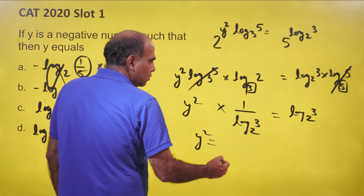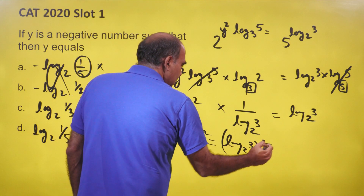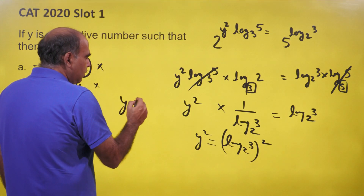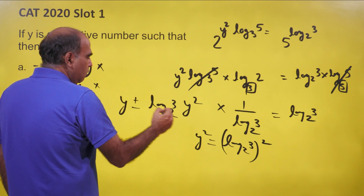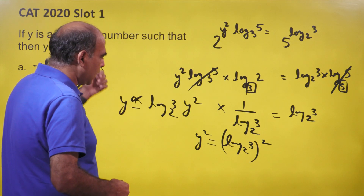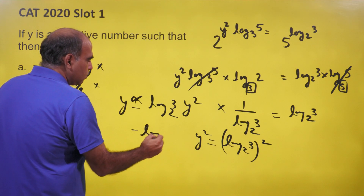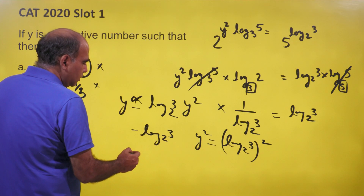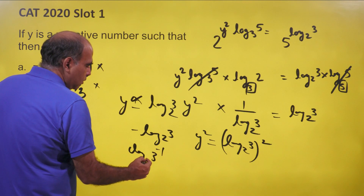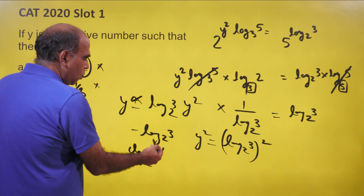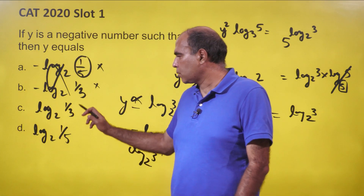Then y² equals (log 3 to the base 2)², which means y equals plus or minus log 3 to the base 2. We eliminate the positive value since y is negative, so y equals minus log 3 to the base 2, which is log 3⁻¹ to the base 2, which means log (1/3) to the base 2. Hence the correct answer is option C.